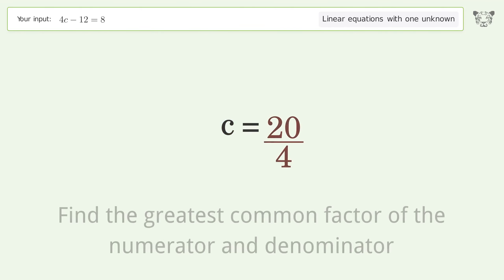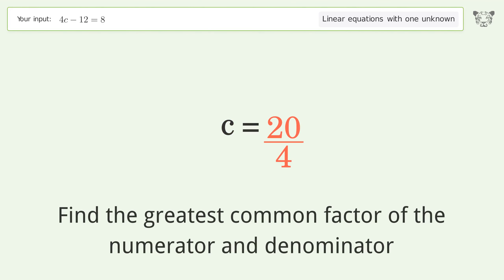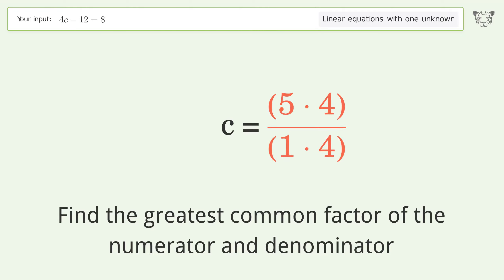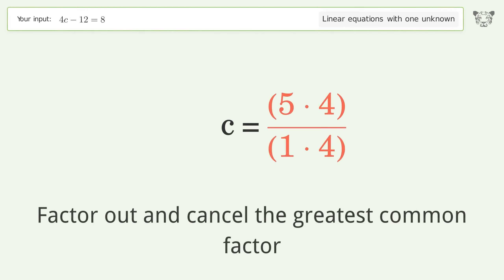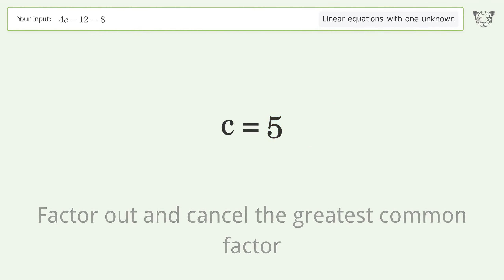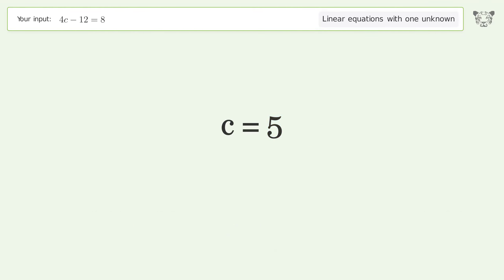Find the greatest common factor of the numerator and denominator. Factor out and cancel the greatest common factor. And so the final result is c equals 5.